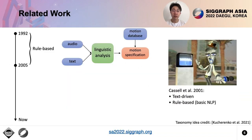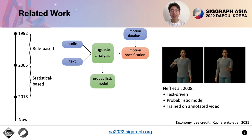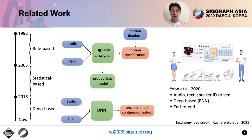Let's go through the related work. The 1990s belongs to the rule-based method. The results of this method are explainable and controllable, but the transitions between gesture units are unnatural. Later, probabilistic models are used to learn the rules, but this method still needs a manually defined database. More recent research focuses on deep learning and trains end-to-end models, which reduces the manual efforts. This method can generate natural-looking motion, but can be difficult to guarantee measured beats and accurate meaning.